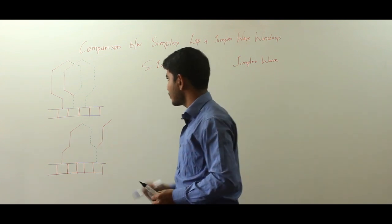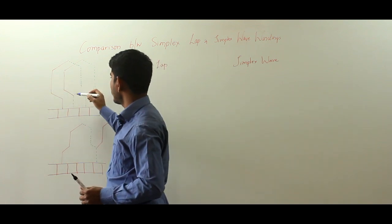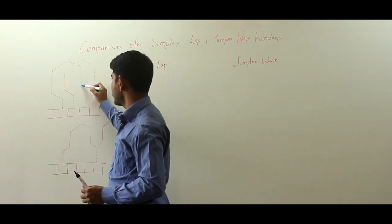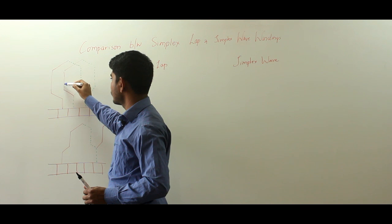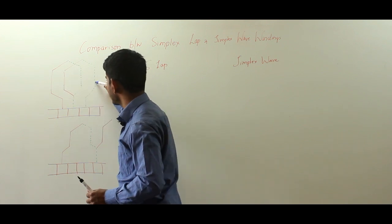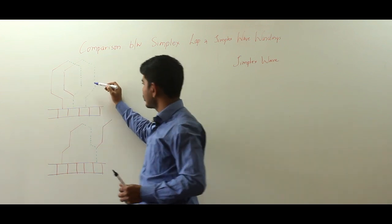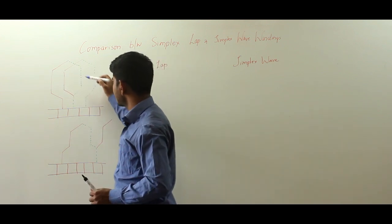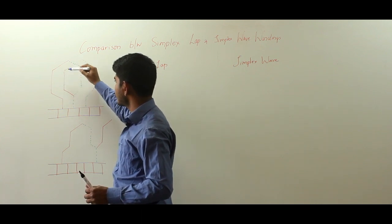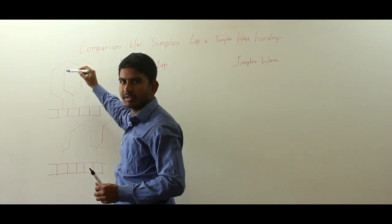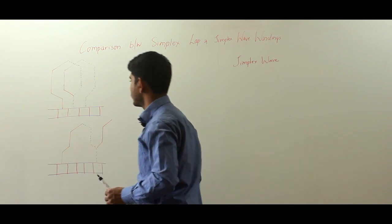For the simplex lap, this is the starting side of one coil and this is the finishing side of that coil. This is the starting side of the second coil and the finishing side of the second coil. The dotted portion represents the bottom position of the conductor and the solid portion represents the top position of the conductor. It is likewise here as well.